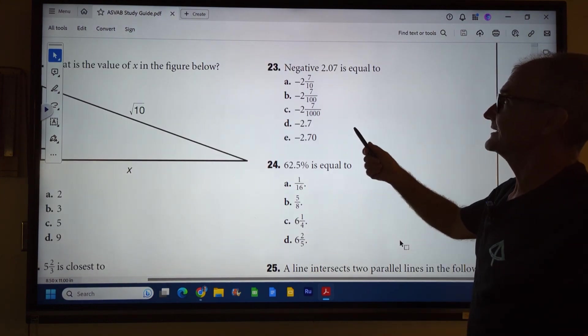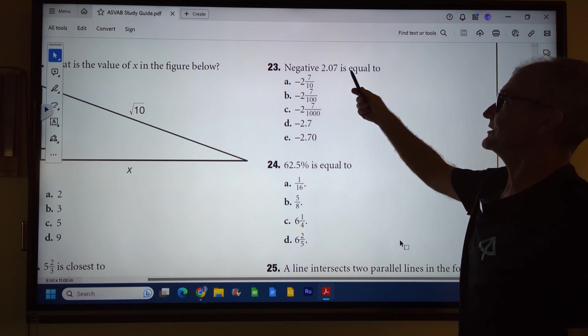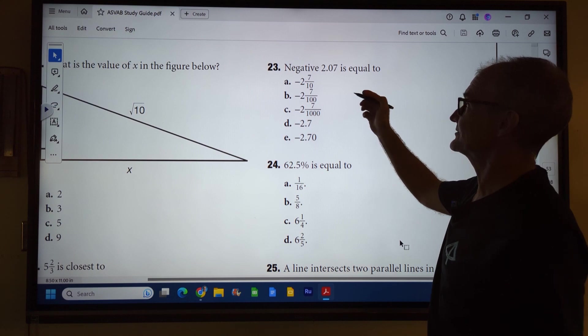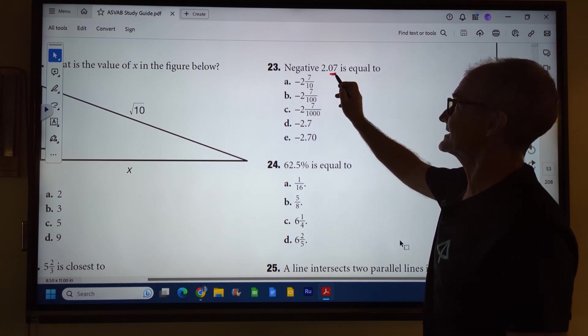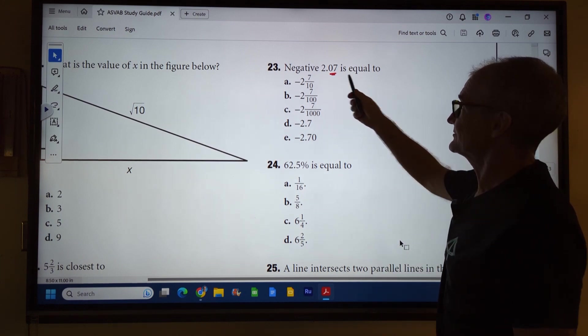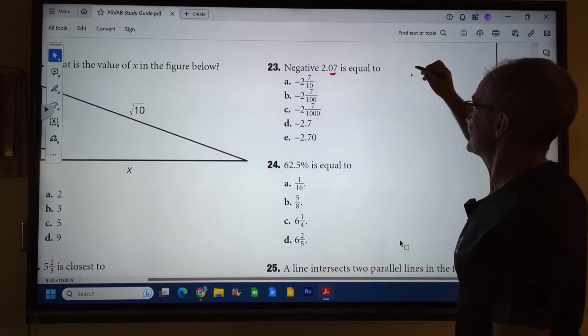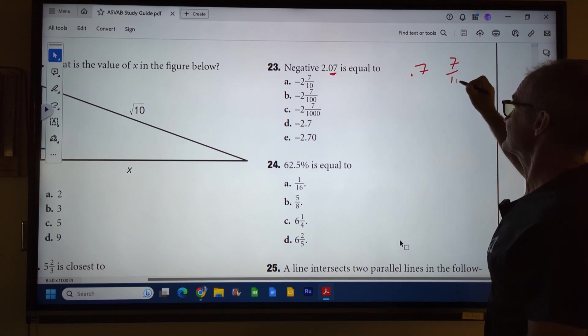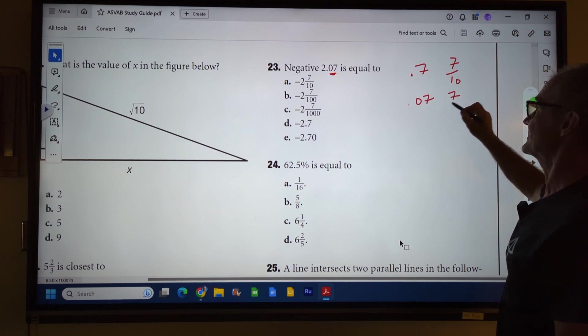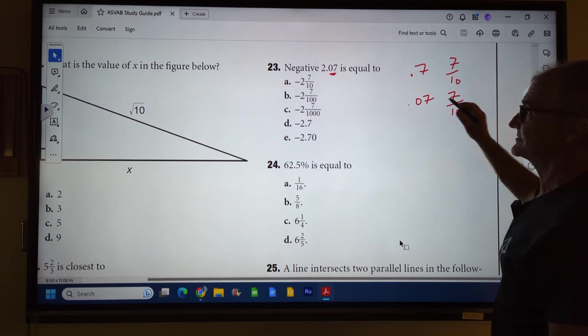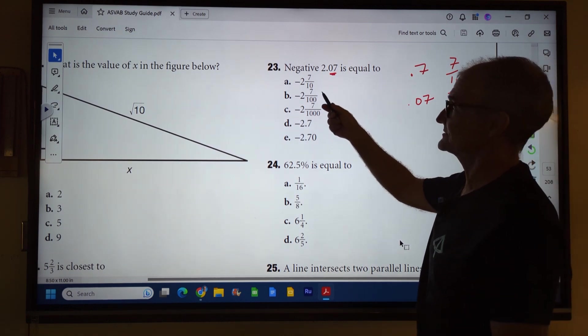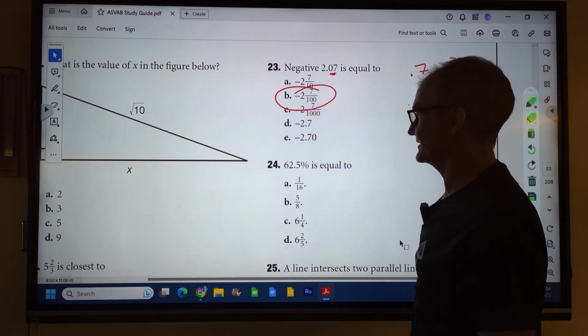Number 23. Two things here, negative 2.07 is equal to which fraction? So you got to, the negative, you got to figure that part out and then you got to convert that 7 in the decimal into a fraction. 7 right next to the decimal would be 7 tenths. But I'm over one more place, so it's .07, so it's going to be 7 one hundredths. So it's going to be negative 2 and 7 one hundredths. Answer B right there.